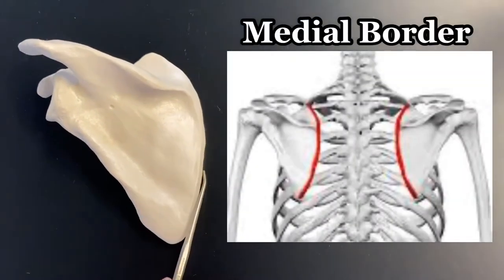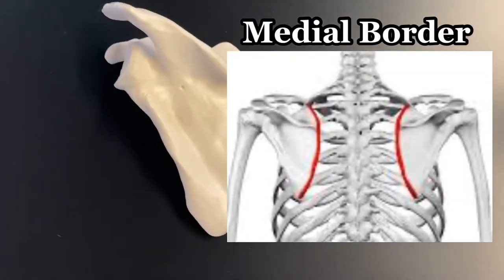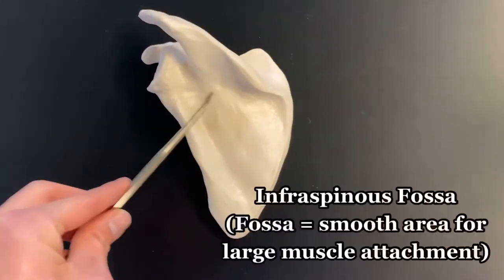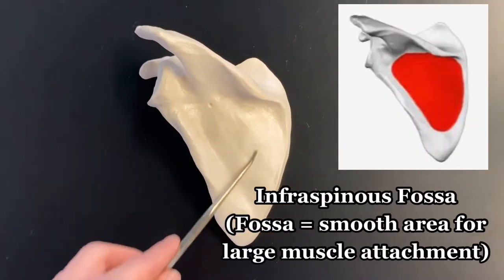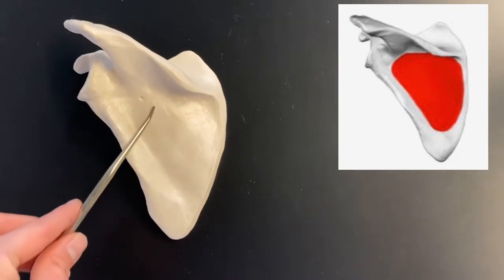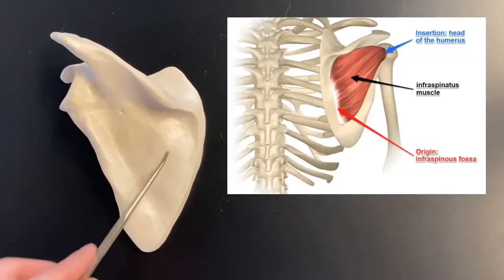Medial border. The last two things to mention are the fossa. So we have the infraspinius fossa. Infraspinius fossa. That's where the infraspinatus muscle would attach.